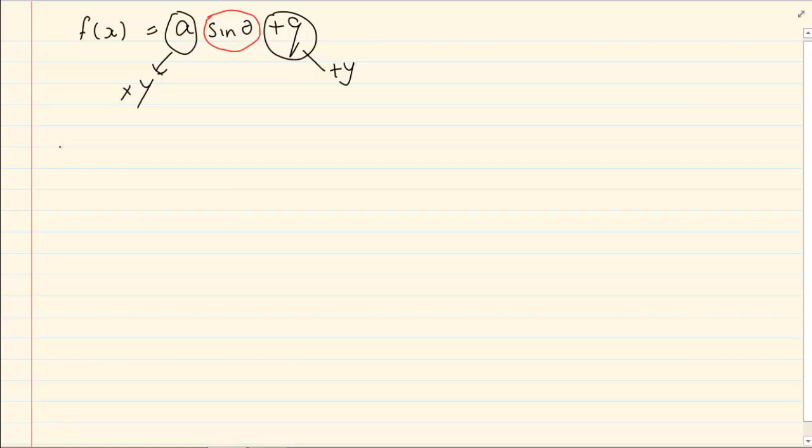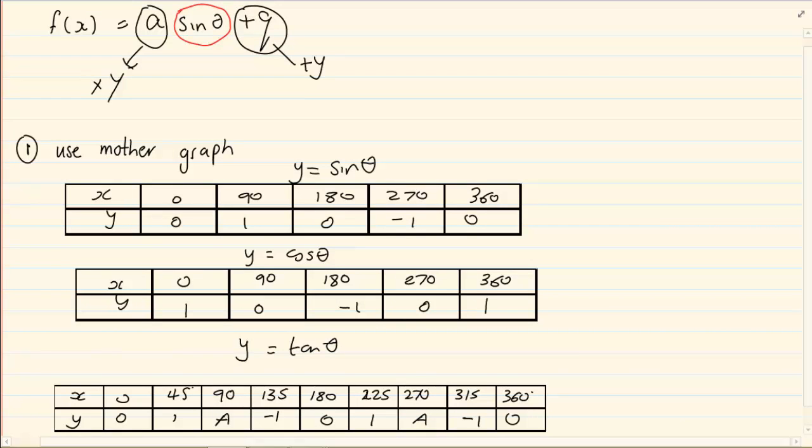So when you are drawing number 1 you are going to use your mother graph. You need to know the standard points of all your mother graphs. So when we are drawing the graphs what we are doing is we are making an adjustment to the y axis. So if it is in front then I would multiply to the y. But if it is at the back and it is adding then I am going to add to the y. Now let's draw a few graphs.